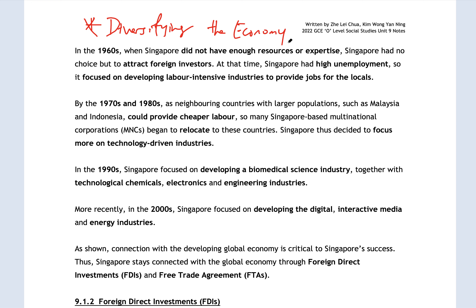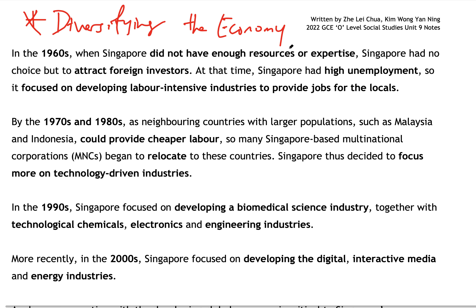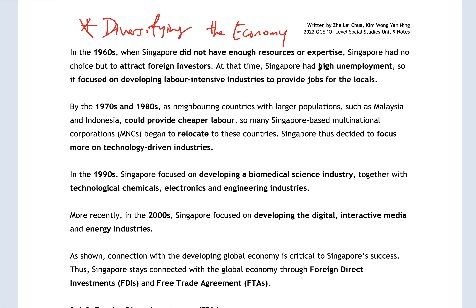When the economy is diversified, we transition the economy to focus on areas that are more important at that time. We can see this with what Singapore's economy focused on from 1960 all the way until today. In the 1960s, when we were a very young country with no resources and no expertise, we had no choice but to rely on foreign investment. To combat the immediate labor shortage following independence, we had to develop labor-intensive industries like manufacturing factories.